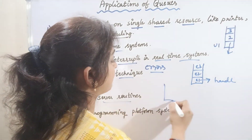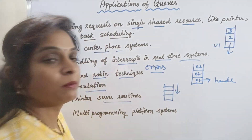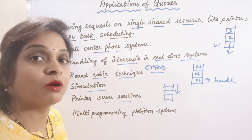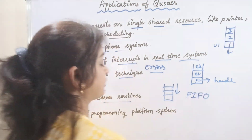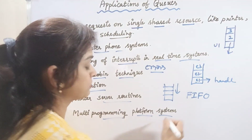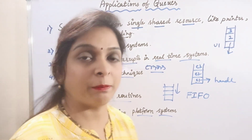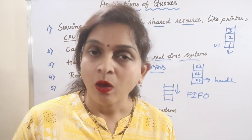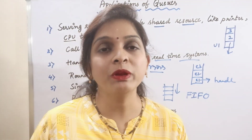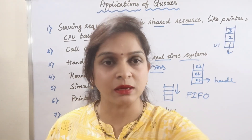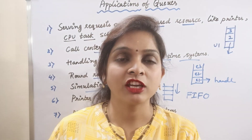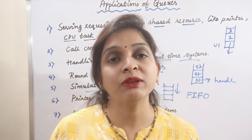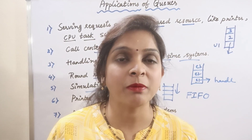Printer server routines work similarly — all print commands are entered into the printing pool and the tasks inside the pool are handled one by one according to the FIFO principle. Then we have multi-programming platform systems. When multiple programs run simultaneously, we get the feeling that all programs are running at the same time, but actually all tasks are put into the queue one by one. For example, you open Notepad, a music file, and a browser — they all appear to run simultaneously.